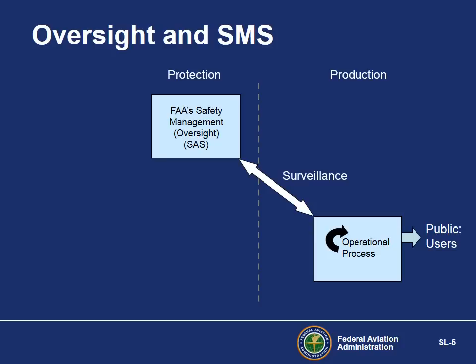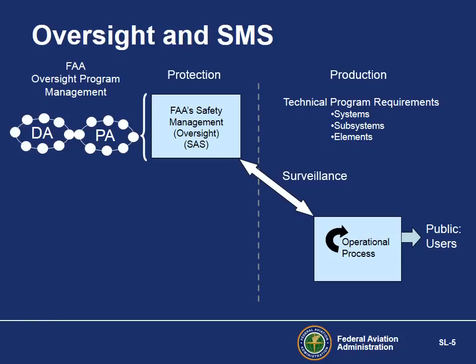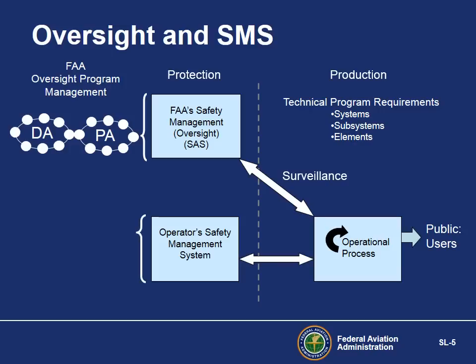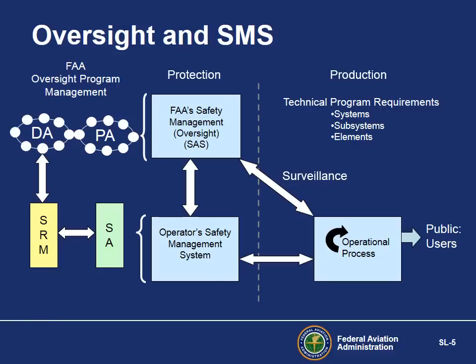The FAA oversight program — ATOS and MPG — and our internal SMS will provide the agency's safety assurance function. ATOS, our current Part 121 oversight system, adds a management system to oversight. These elements organize regulatory requirements into a systematic structure of systems, subsystems, and elements. ATOS and MPG organize the oversight system into two sets of modules: design assessments and performance assessments (PAs). Real safety management must involve processes from within the operator's organization. Thus, we add the operator's SMS — the external SMS — consisting primarily of the two functional processes of SRM (design) and SA (performance) that we discussed earlier.